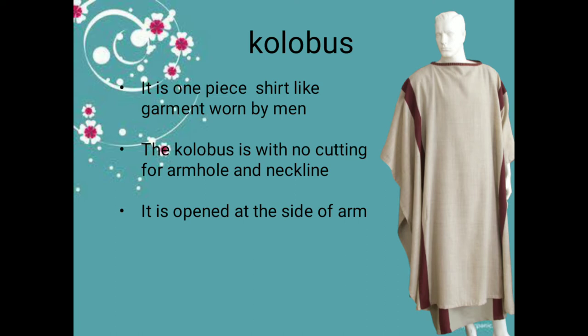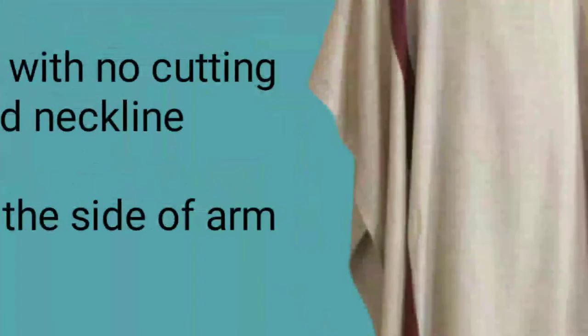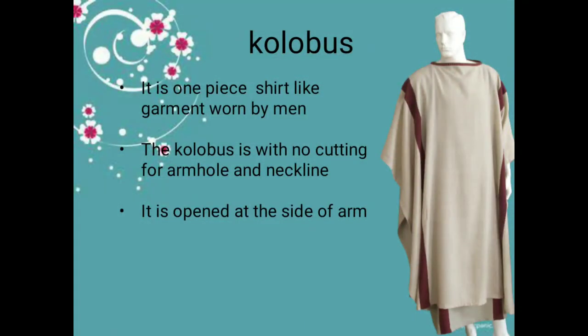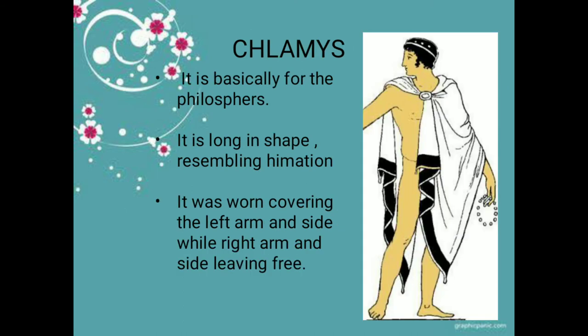The kolobos is a one-piece shirt-like garment worn by men. It has no cutting for the armhole and neckline — there is only a cutting from the neckline, not the armhole. It opens at the sides of the arms, so the sides are open with no stitching or fastening. You can imagine how it opens from the sides of the arms.